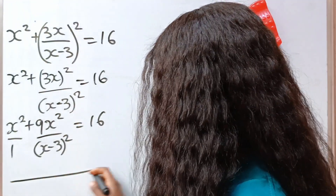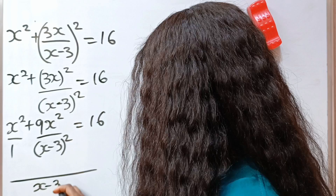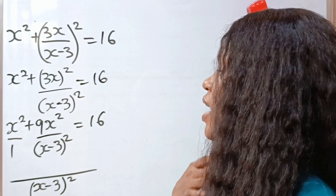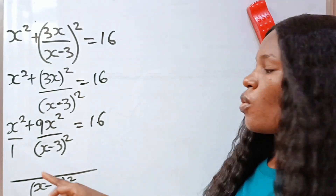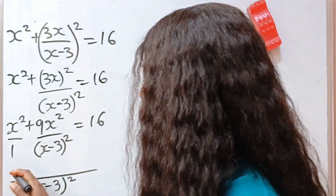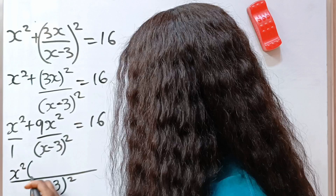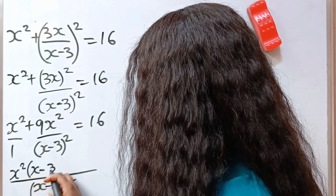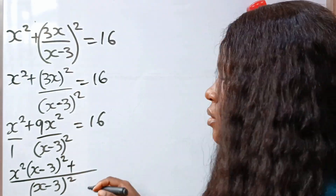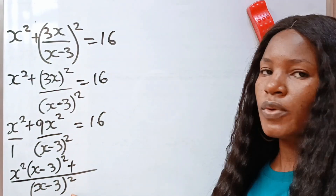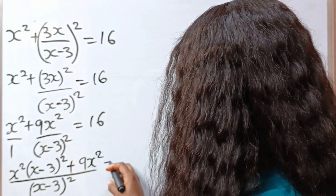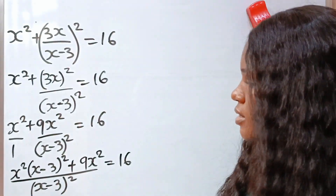So we have x minus 3 squared as the common denominator. When 1 is divided by this, we still have this, so we use it to multiply our numerator. We get x squared bracket x minus 3 squared, plus when this is divided by this we have 1, times this is still the same — all equal to 16.